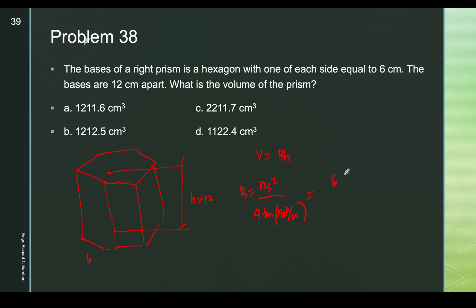With n = 6 and side s = 6: base area = 6 × 6² / (4 × tan(180°/6)) = 6 × 36 / (4 × tan 30°) = 54√3. The volume = 54√3 × 12 = 648√3 ≈ 1122.37 cubic centimeters, which is approximately 1122 or 1123 cubic centimeters.